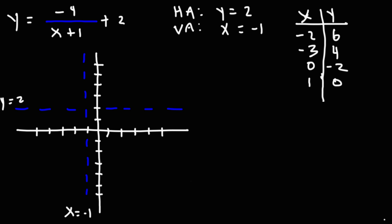So that gives us the x-intercept. So plotting the points, we have negative 2, 6, which should be here. And then negative 3, 4. At 0, we have negative 2. And at 1, we have 0. Now let's get some additional points. We don't have to do this, but just to make a more accurate graph.